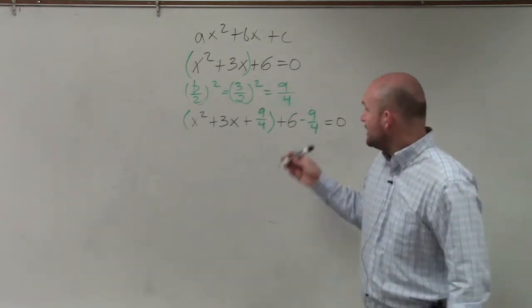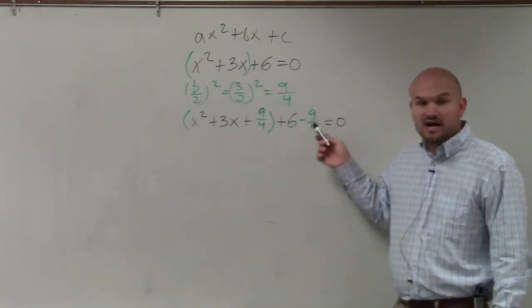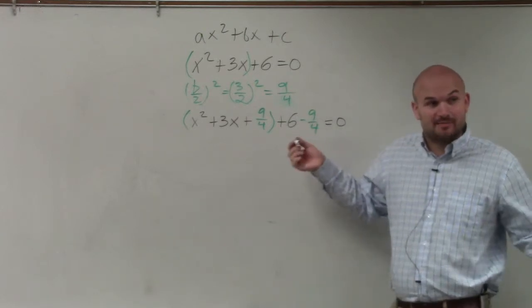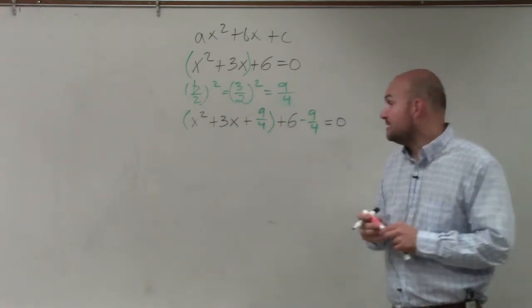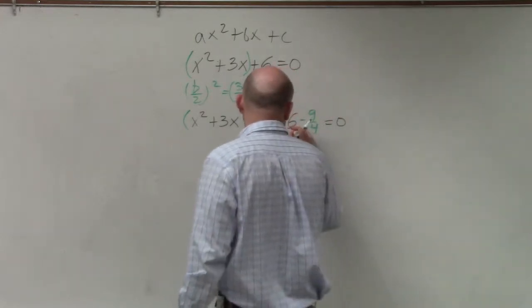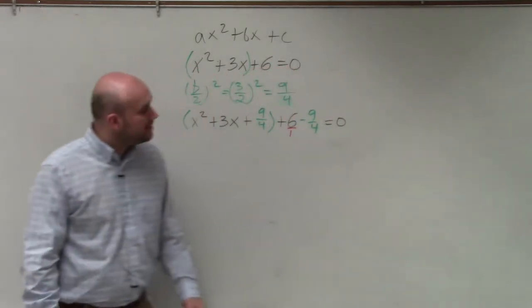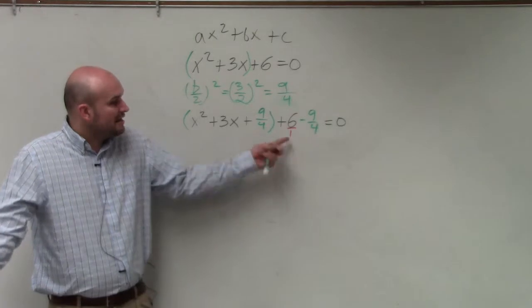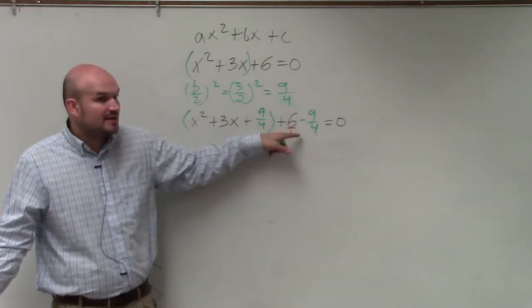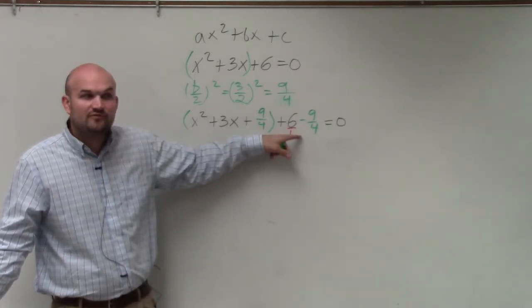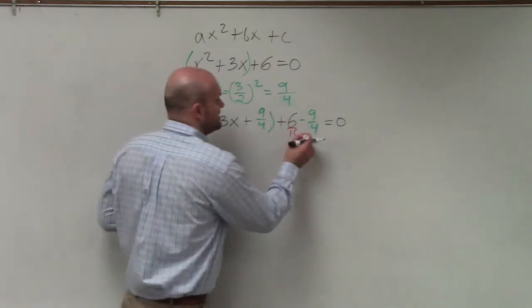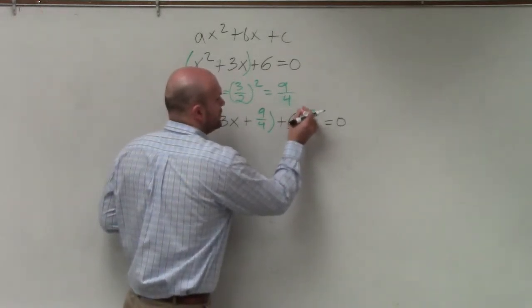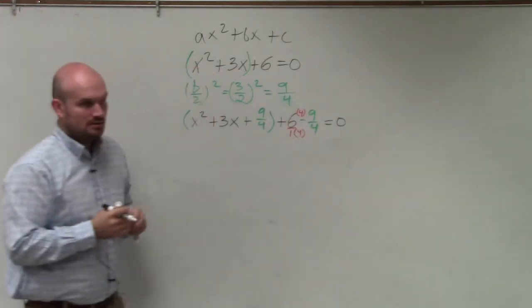Now remember, though, we cannot take a whole number and subtract them from a fraction unless they have the same denominator. So we need to subtract these, meaning we need to get common denominators. So what I'll do is I'll rewrite my whole number as a fraction. So to get these the same denominator, they have to have the same common denominator, which would be 4. So that means I need to multiply this by 4 over 4.